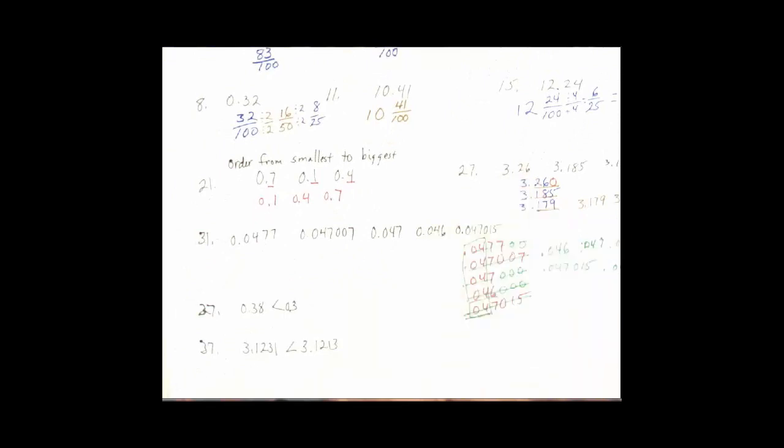The last skill in this section here is that they're asking to see if these are equivalent, if this is a true statement. So again, I like to compare. So I have .38 and 0.3. So I have two spots behind the decimal.